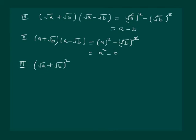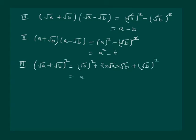The square of under root of a plus under root of b whole squared equals under root of a whole squared plus 2 into under root of a into under root of b plus under root of b whole squared, which simplifies to a plus 2 root of ab plus b.